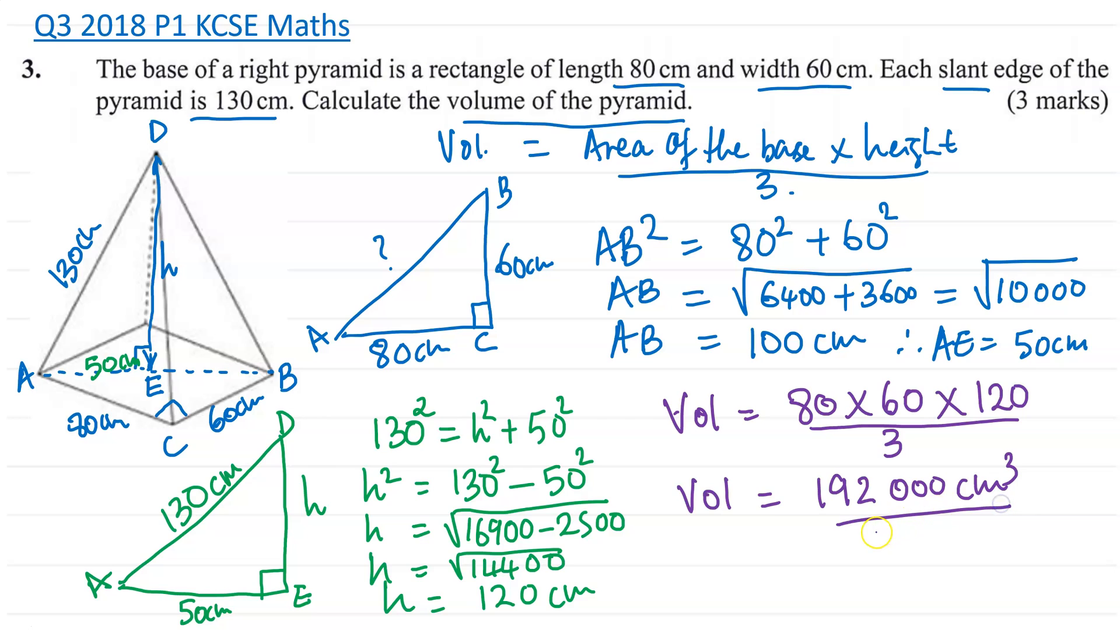Now if you work this out, then you will get the volume of this pyramid is 192,000 centimeters cubed. So this is the answer to this question. Guys, if you enjoyed this video, remember to press like and subscribe to see more questions. Thank you and bye for now.